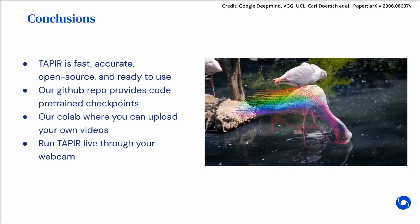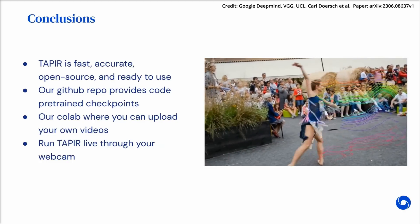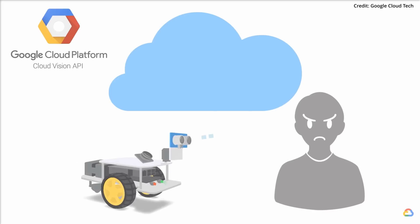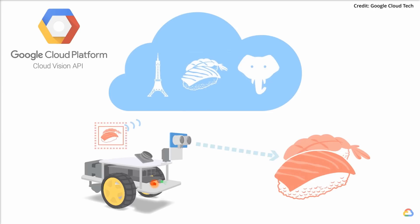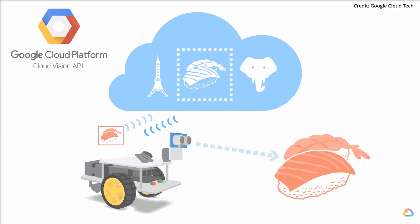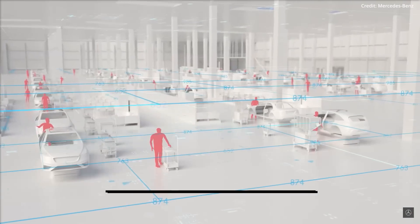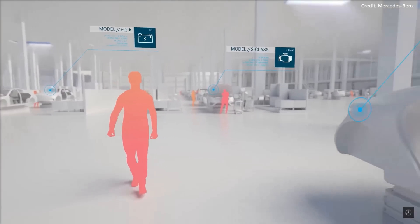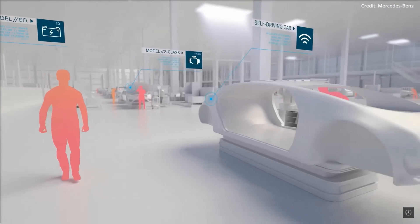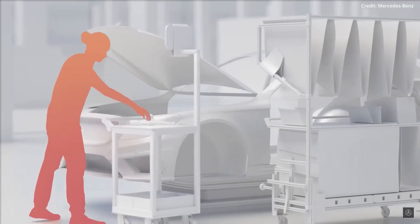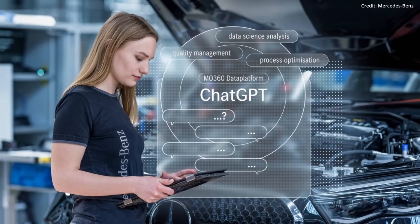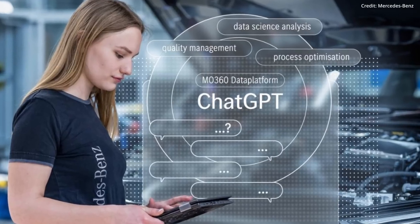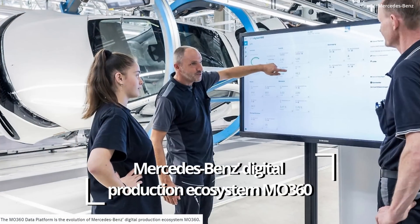The second webcam demo enables you to use your webcam as the input source and select any point on your face or any other object to track as you move around. Both demos showcase TAPER's prowess in tracking any point on any object with astounding accuracy and precision, even in the face of occlusions, motion blur, illumination changes, and scale variations. This breakthrough in computer vision indicates significant progress, with wide-ranging applications anticipated in the very near future. Meanwhile, Mercedes-Benz, a leader in automotive production, is trailblazing the utilization of advanced AI tools in its production operations.